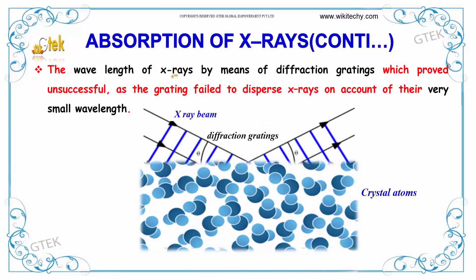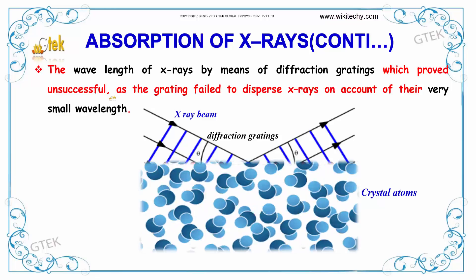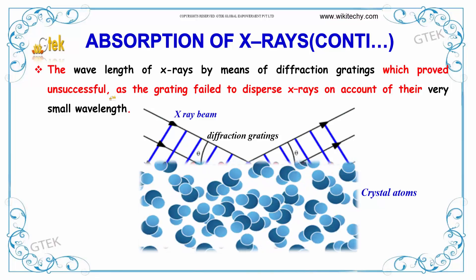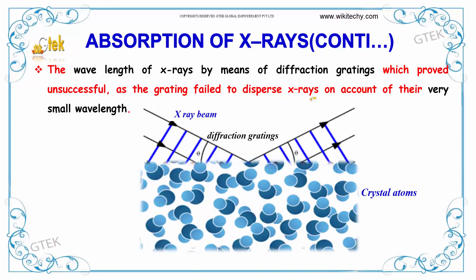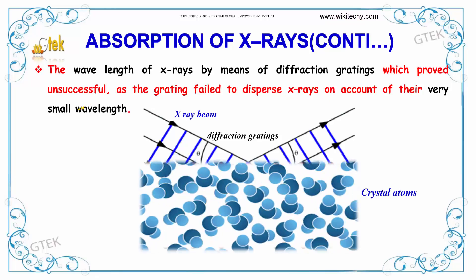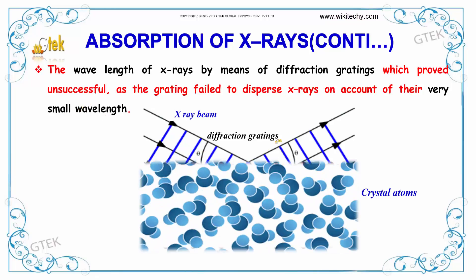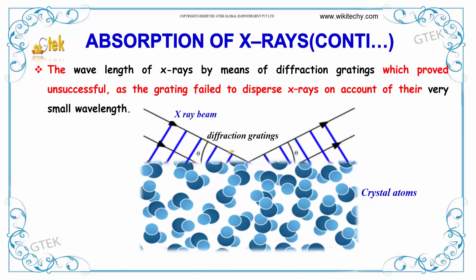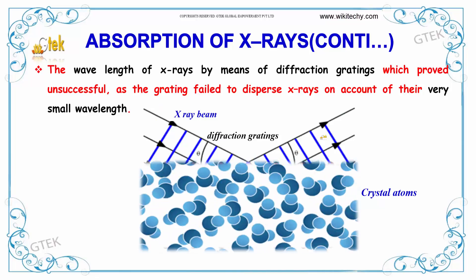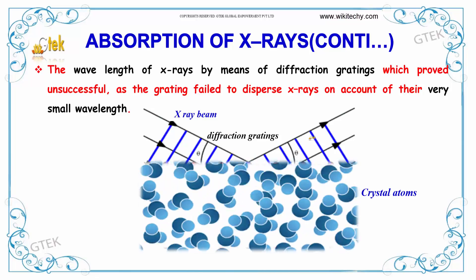Attempts were made to measure the wavelength of X-rays using diffraction gratings, which proved unsuccessful. The grating failed to disperse X-rays on account of their very small wavelength. You can see radiation reflection happening on the diffraction grating — the X-rays are reflecting.